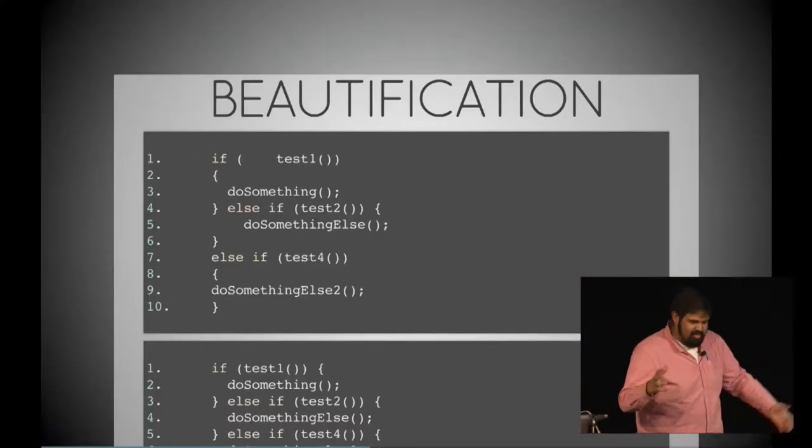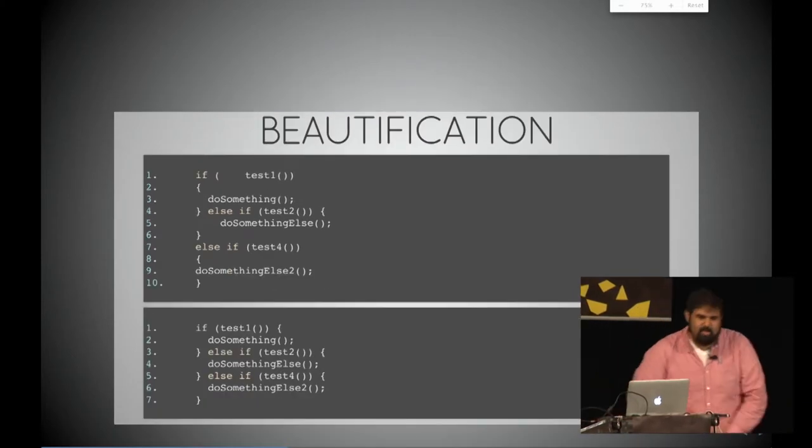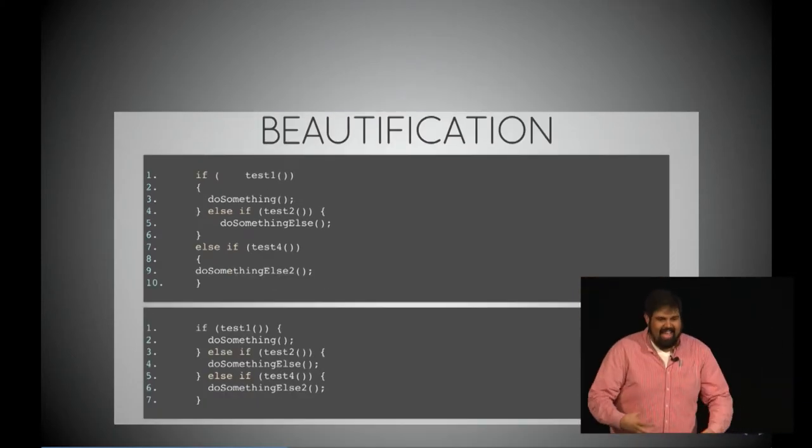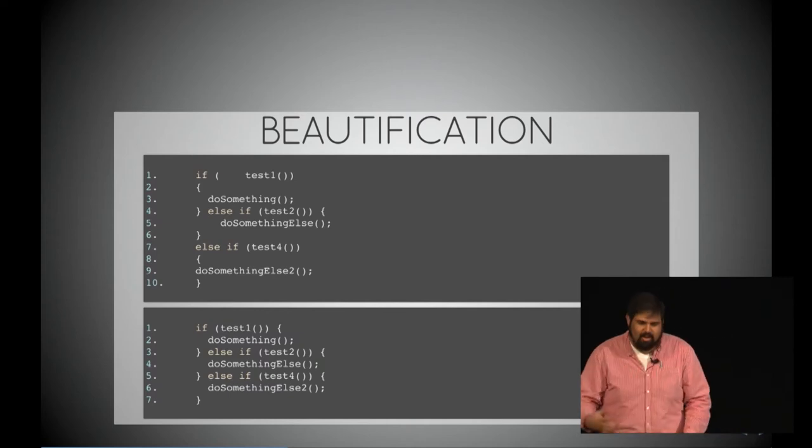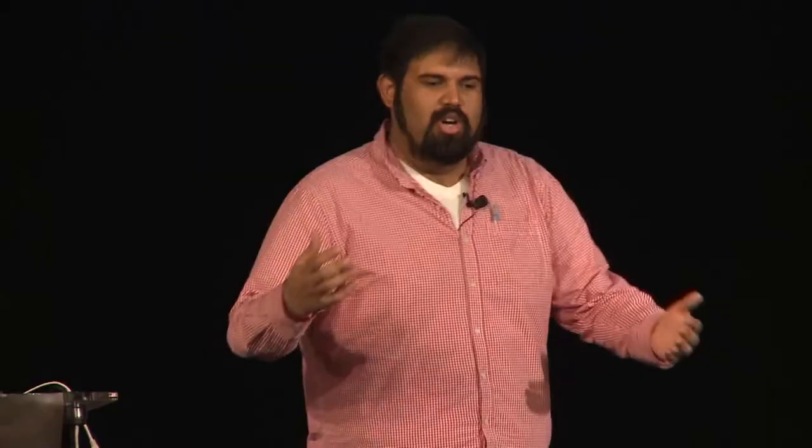Now we're at the next layer of static analysis: beautification. I am very annoyed every time I get a code review comment that I have two spaces instead of four, or three spaces instead of two. This is a complete waste of time when a computer can do it for me. I like writing code sometimes with 19 statements on one line — I want an automated tool that makes everything conform to the standards my team has agreed to, without requiring our mental process in code reviews.